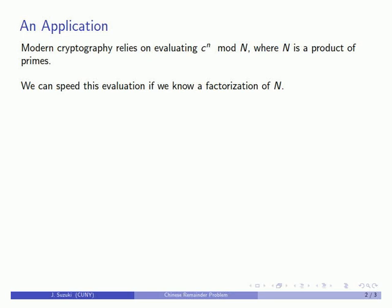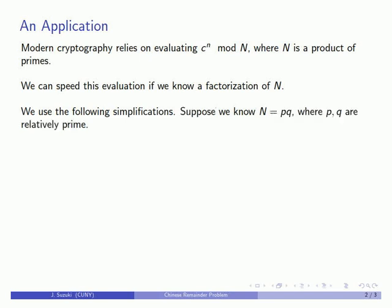We can speed the evaluation if we know a factorization of N. Suppose I know that N is p times q, where p and q are relatively prime. They don't actually even have to be prime, they just have to be relatively prime.